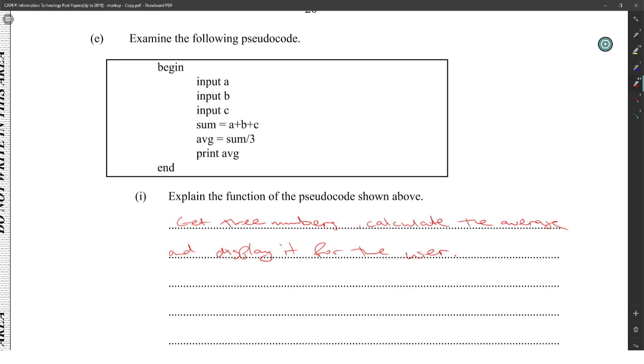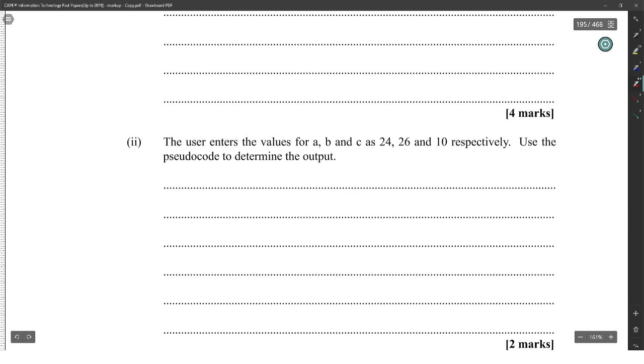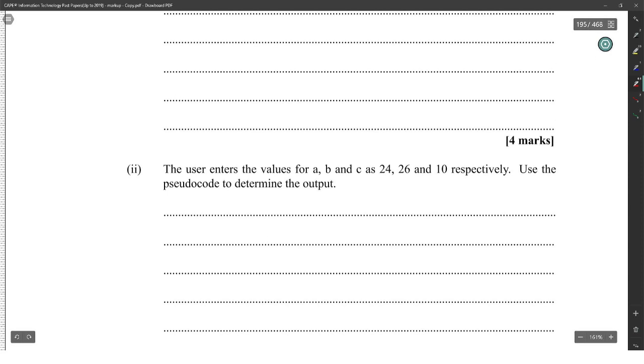Explaining the function - it begins, then it assigns three variables a, b, and c as 24, 26, and 10. It uses a formula to determine the output. They literally want you to calculate the average. 24 plus 26 plus 10 equals 60, divided by 3. 60 divided by 3 equals 20.